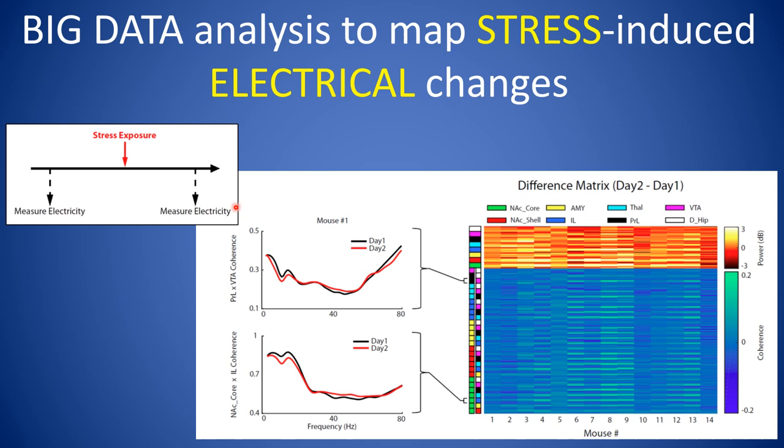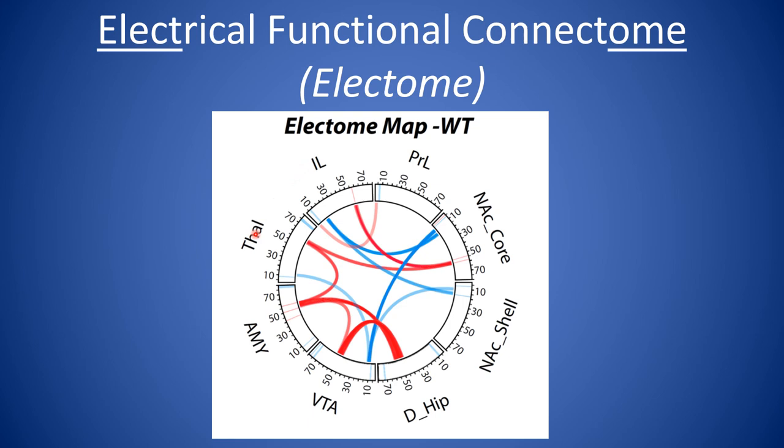For each brain area we've implanted, we'll extract oscillatory power across frequency bands and ask how that changed. We'll get hundreds of those measures for each animal. We're also going to ask about how electrical processing between areas changed as a function of coherence. We'll get thousands of those measures. We'll repeat this process across multiple animals and subject all of that data to machine learning. What that allows us to do is create an electrical map which tells us which changes in electrical signatures relate to the animal's behavioral change as a function of stress exposure.